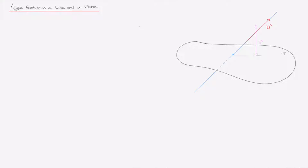In this video we'll learn how to find the angle between a line and a plane. On the right hand side here we've drawn a plane on which we've added a couple of things. In blue we have a line which is clearly at an angle to that plane. That line has a direction vector u which we've added in red. The plane has a normal which we've called n, drawn in pink. What we're trying to find is the angle between the line and the plane, which we'll call theta.